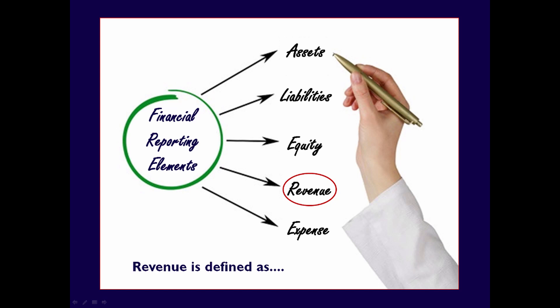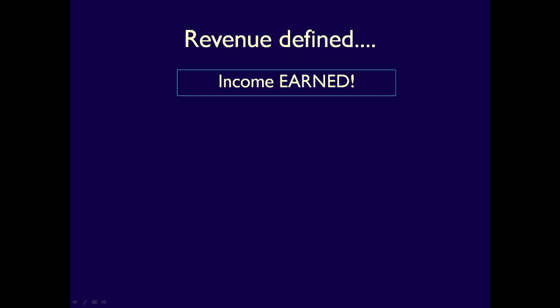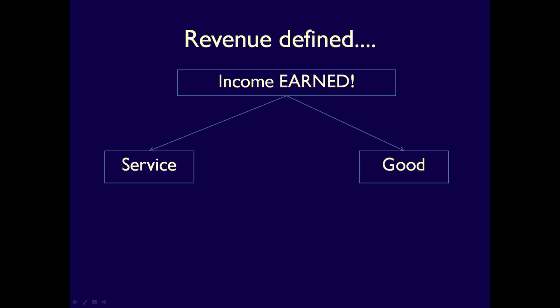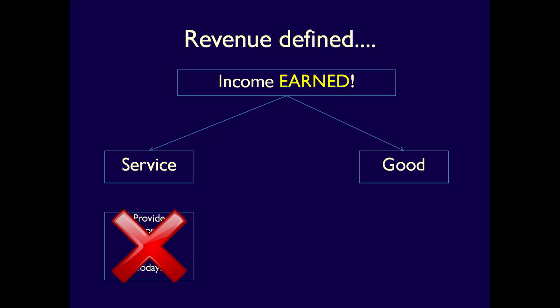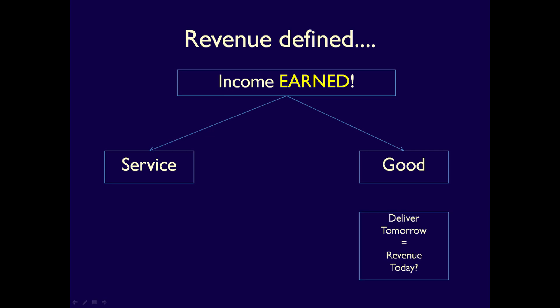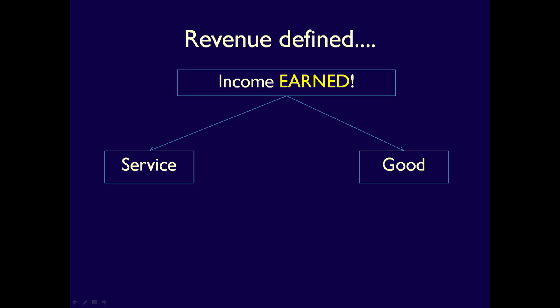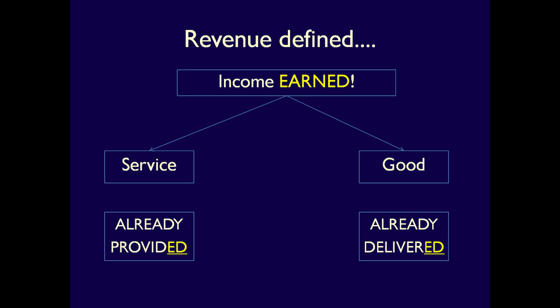Let's move on to the element revenue and its definition. Revenue is the income a business earns, and there are only two ways to earn revenue: businesses either provide a service or a good. The key to revenue is that it must be earned — meaning the business has done their job, past tense. For example, if a lawn care business plans to mow a customer's lawn tomorrow, that is not earned revenue today because they have not done their job yet. After they've finished mowing the lawn, they'll have earned their revenue. Revenues can only be recognized when the business has finished the job — provided the service or delivered the good. The past tense is very important with regards to the element revenue.